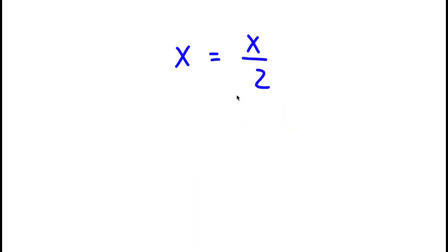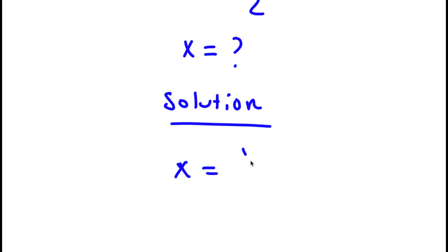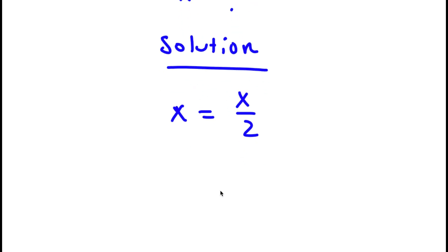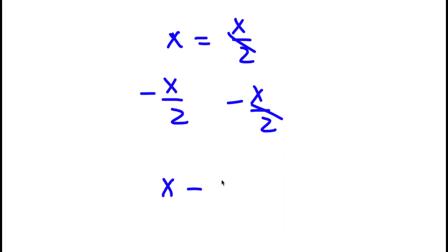For this problem, I have x is equal to x over 2. I want to find the value of x. For my solution, I first start with x is equal to x over 2. Now I'm going to subtract x over 2 on both sides. So then these two x over 2s cancel out, and now I'll be left with x minus x over 2 is equal to 0.